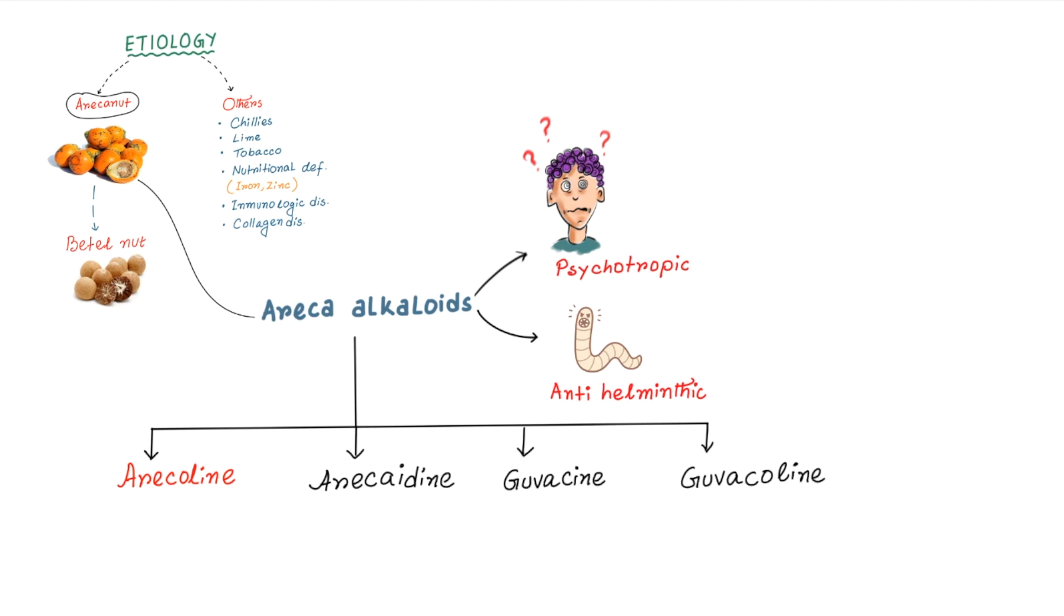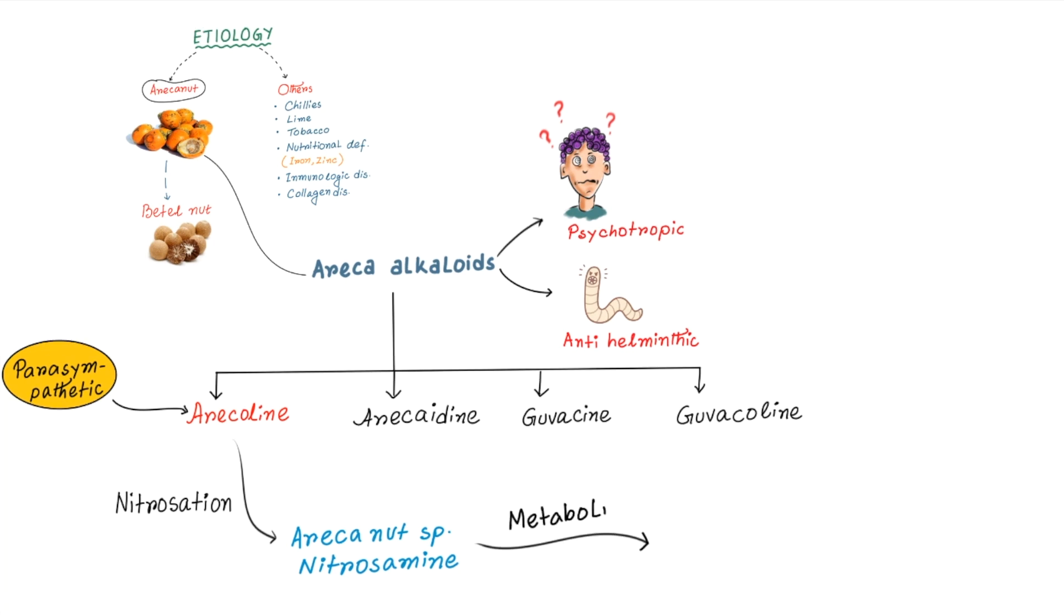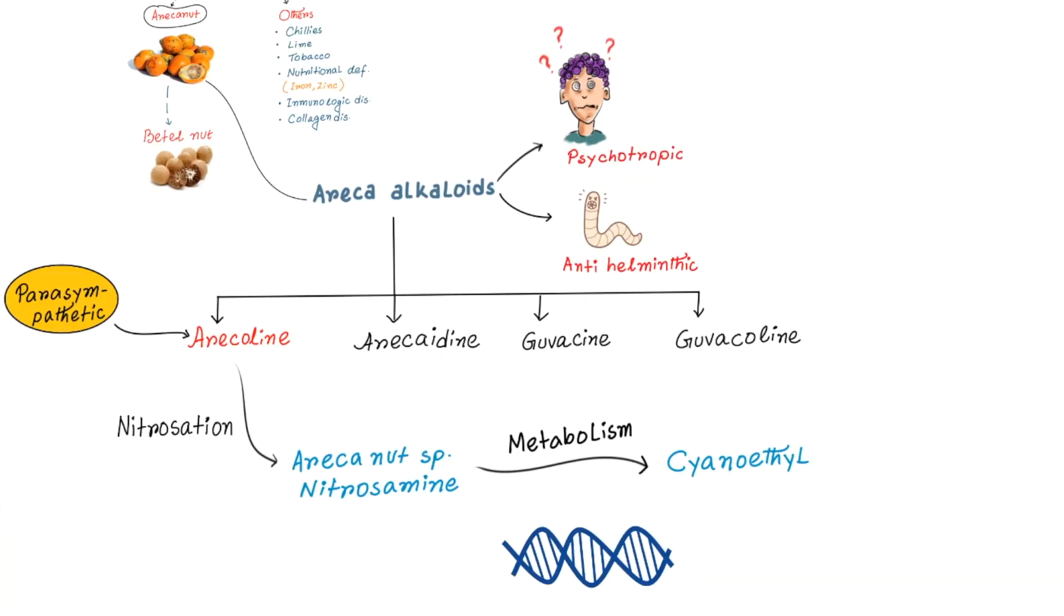These alkaloids have powerful parasympathetic action. Nitrosation of arecoline leads to the formation of arecanut specific nitrosamine. Metabolism of this arecanut specific nitrosamine leads to the formation of cyanoethyl which binds with the O-methyl guanine in DNA. Prolonged exposure of this irritant leads to malignant transformation.